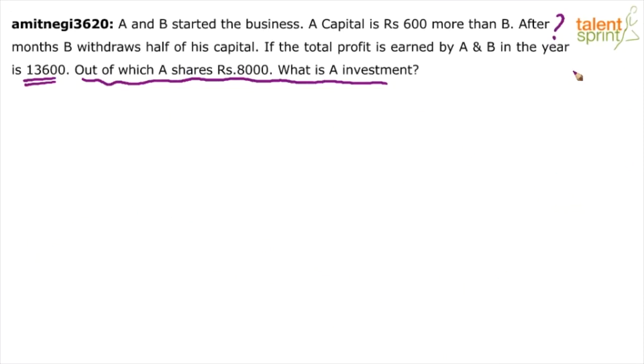But Amit, see, your question has come but it's incomplete. You have mentioned A and B started the business, A's capital is Rs. 600 more than B's capital. After some months B withdraws half of his capital. If the total profit earned by A and B is Rs. 13,600 in which A's share is Rs. 8,000, what is A's investment? Yeah, Chandan has also mentioned the same thing that Amit Negi is present here, he was asking for the same question in the session. But Amit, the answer cannot be determined in the given case because the value is missing.